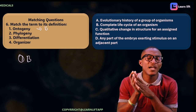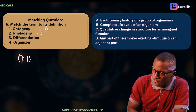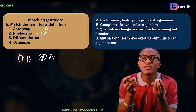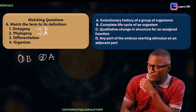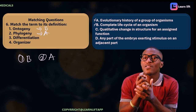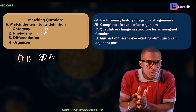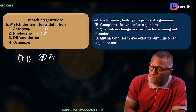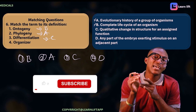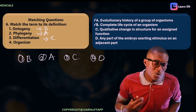Phylogeny talks about the evolutionary history of an organism, so number two matches to A. Differentiation involves qualitative changes in structure for an assigned function — you are changing in structure depending on your assigned function — so number three matches to C. Organizers are any part of the embryo that has a stimulus on adjacent parts, so number four matches to D.